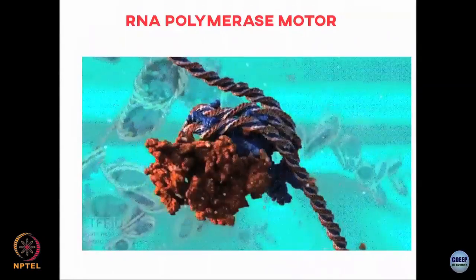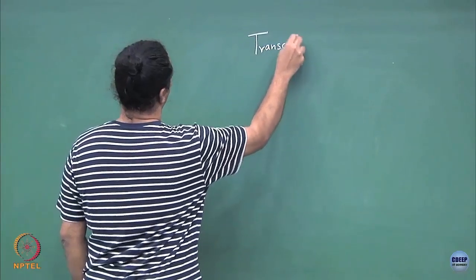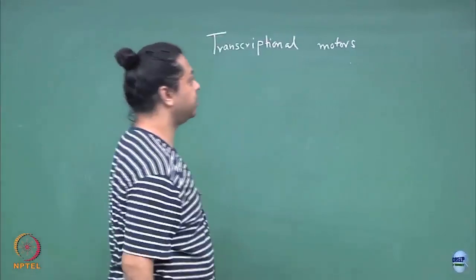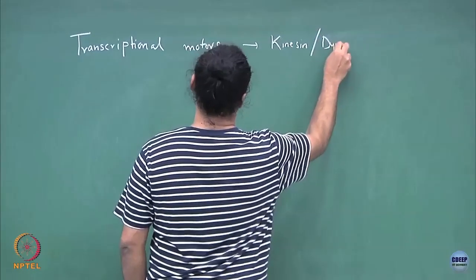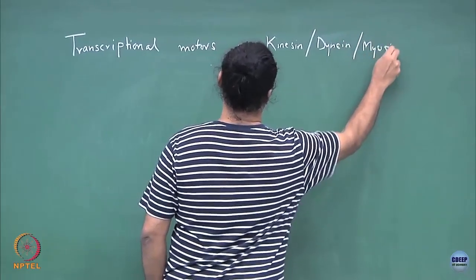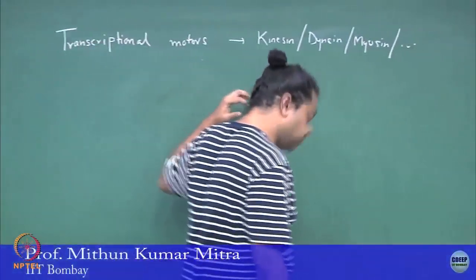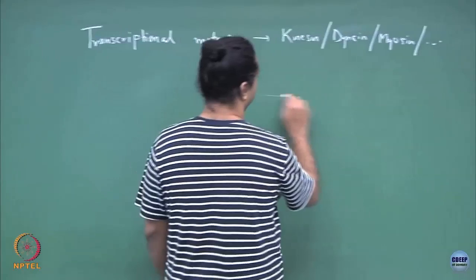For the first part, what I will focus on are translational motors - families of translational motors. Broadly, I will categorize motors into maybe three classes: translational motors like kinesin or RNA polymerase - kinesin, dynein, myosin and so on. These are motors that take in chemical energy and use it to produce directed motion along different substrates in different contexts, but produce directed linear motion along a track.